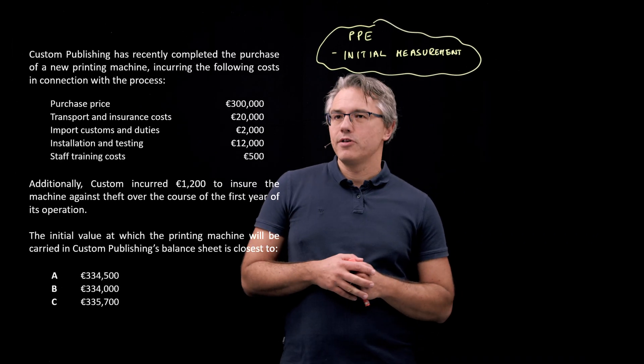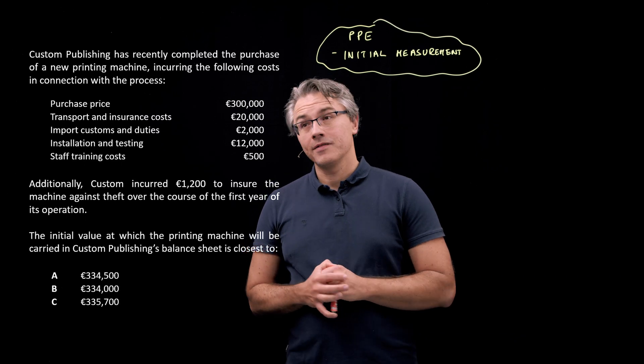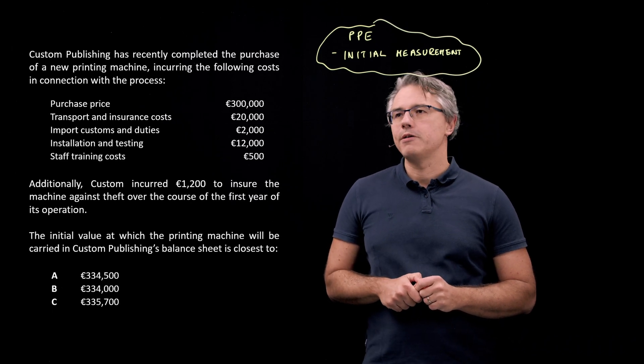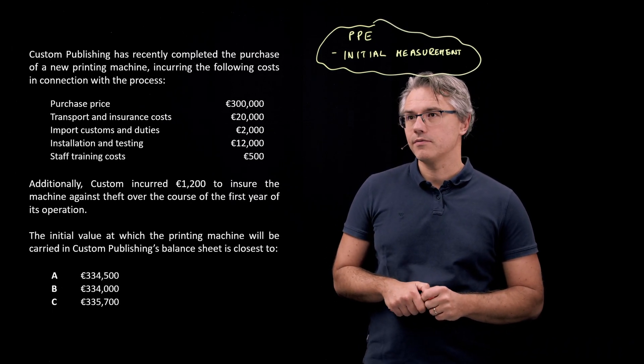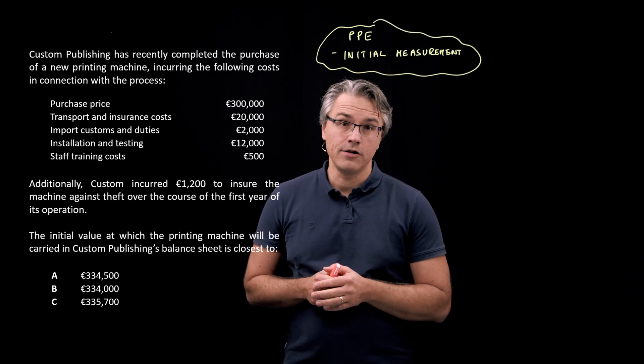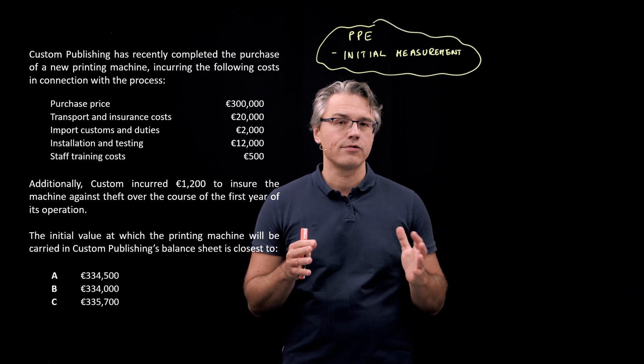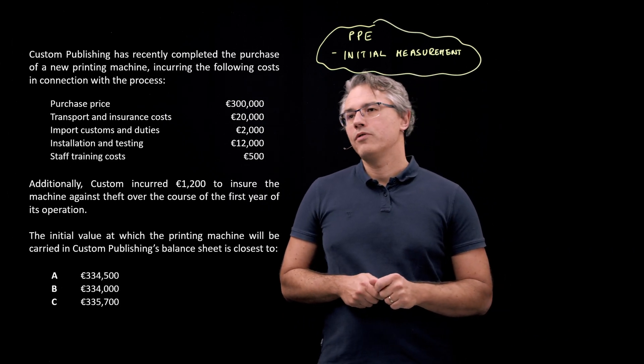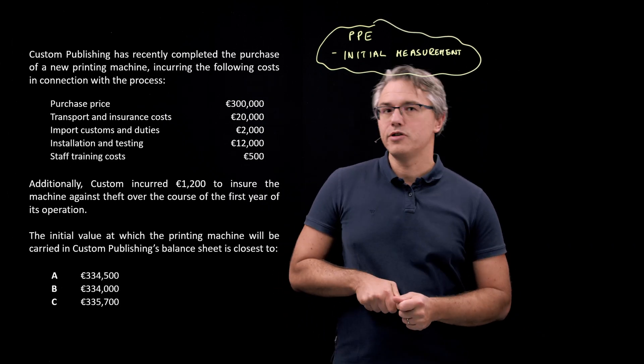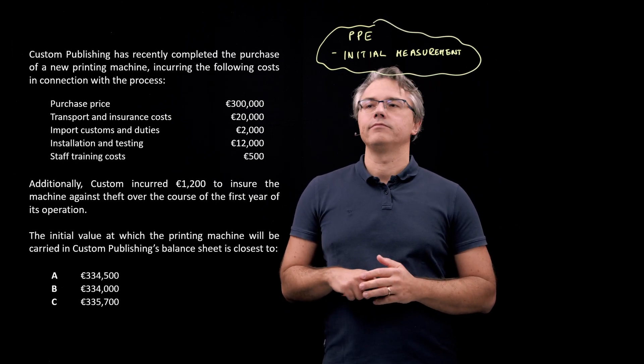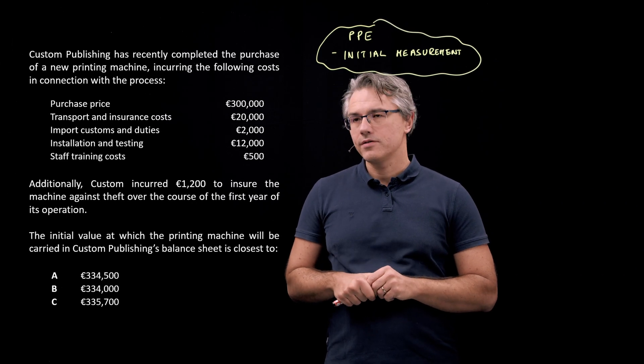So this is the question which I want us to have a go at. Custom Publishing has recently completed the purchase of a new printing machine incurring the following costs in connection with the process. We've got the purchase price of the machine itself, transport and insurance costs, and in this case insurance means insurance during the transport process, import customs and duties, so obviously the machine was purchased from abroad, installation and testing, then staff training costs.